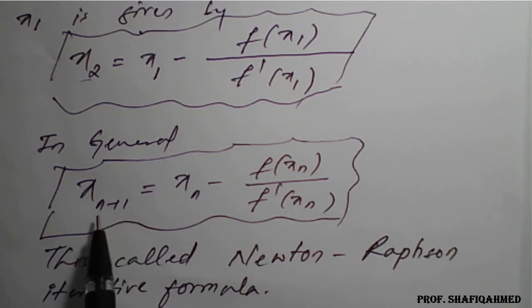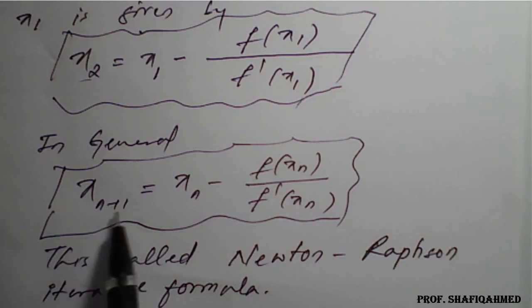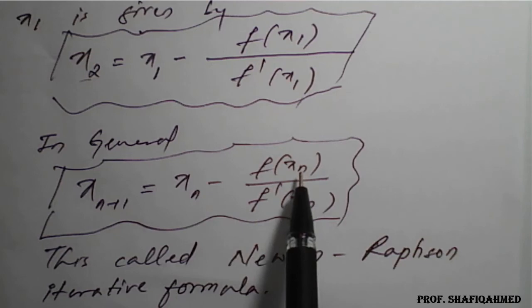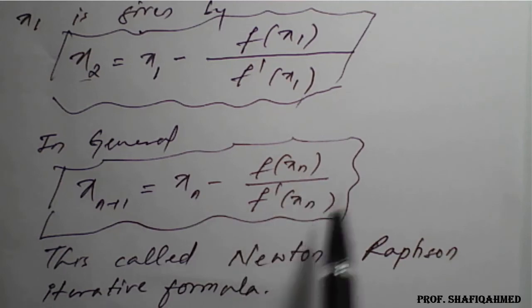If you want to go for the third iteration, put n = 2. Then x₂₊₁ becomes x₃ = x₂ - f(x₂)/f'(x₂).